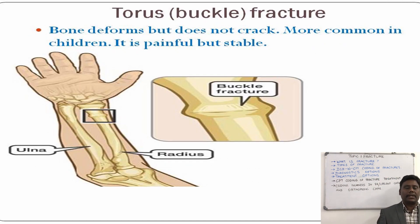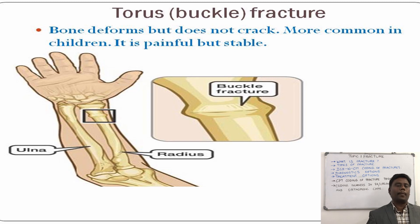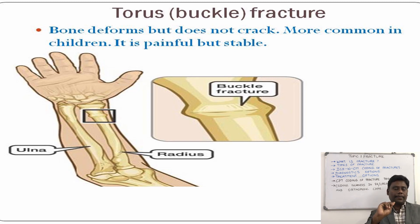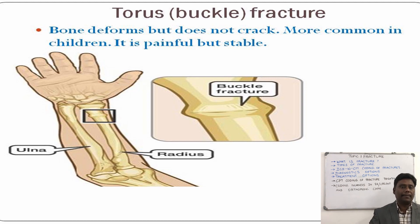Torus fracture, also known as buckle fracture, is very common in children, where a bony deformity will occur but the fracture would not be complete.